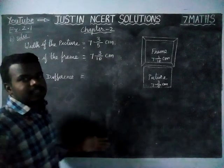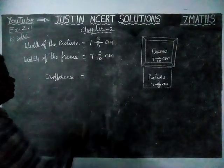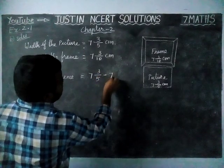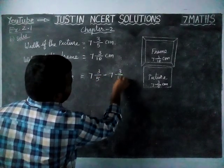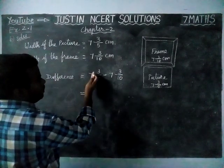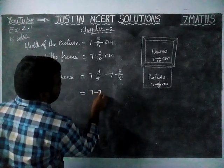We have to find the difference: 7 3/5 minus 7 3/10. Now 7, we are going to take the whole part separately. 7 minus 7.